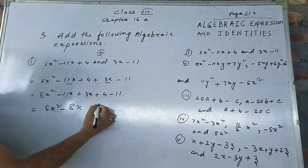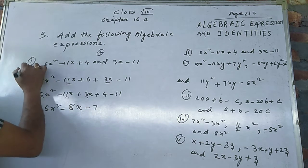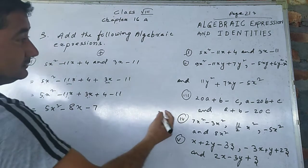5x² here, and 11 minus 3 is 8, so minus 8x, and 11 minus 4 is minus 7. This is the solution of number one. Now I'm going to solve number two.